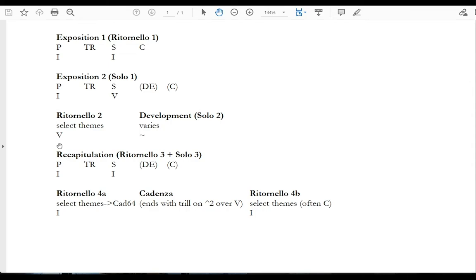In any event, like any recapitulation, this section's job is to confirm the tonic key. So we'll get some version of primary theme. It might be more like Expo 1 or like Expo 2 or combine them, but we'll get some nod to the primary theme, some version of a transition. The secondary theme, as expected, will return in tonic, not in the subordinate key as it would have been in Exposition 2.